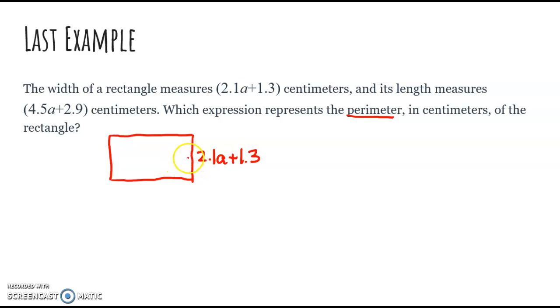And one thing we know about rectangles is if this side is 2.1a plus 1.3, this side is also 2.1a plus 1.3. The length is 4.5a plus 2.9. And we know that these are the same because it's a rectangle. And then we need to know what perimeter is. Perimeter is the length all the way around the rectangle. So how are we going to solve this?